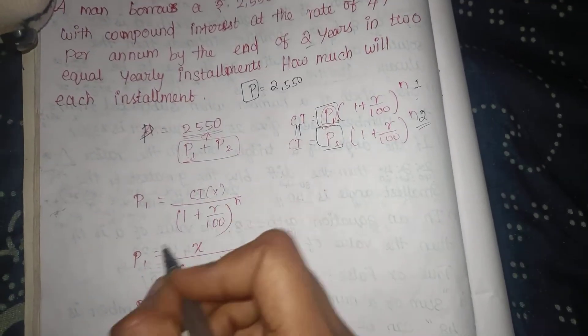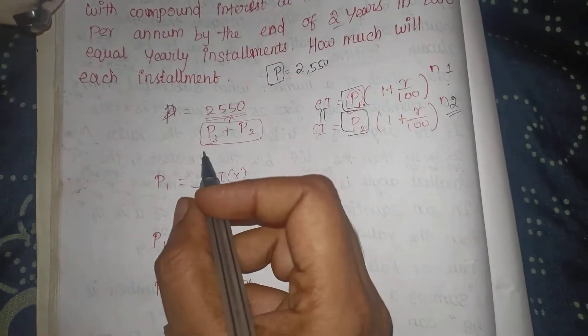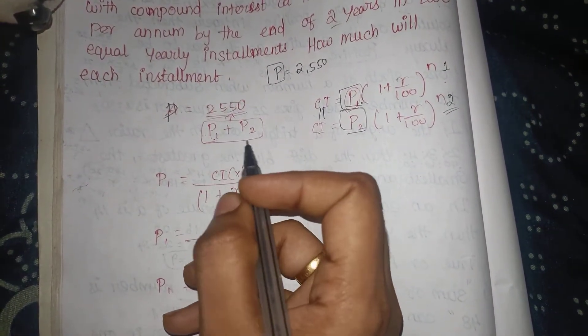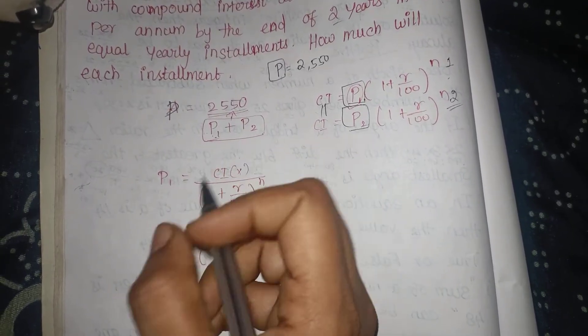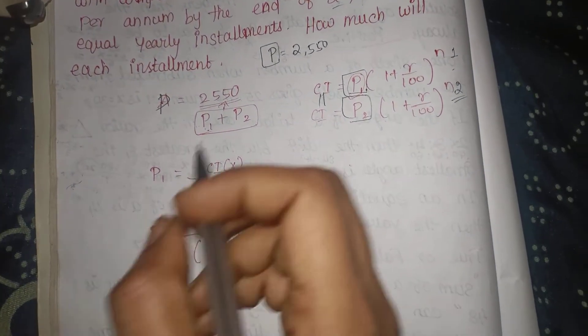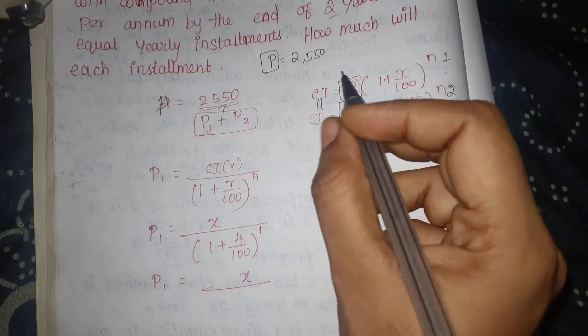Using the formula, we take P1 and add P2. Then we substitute into the compound interest formula and the compound interest will change accordingly.